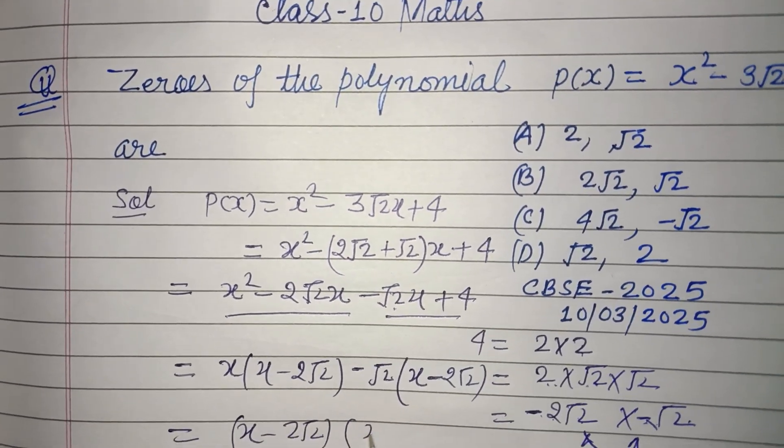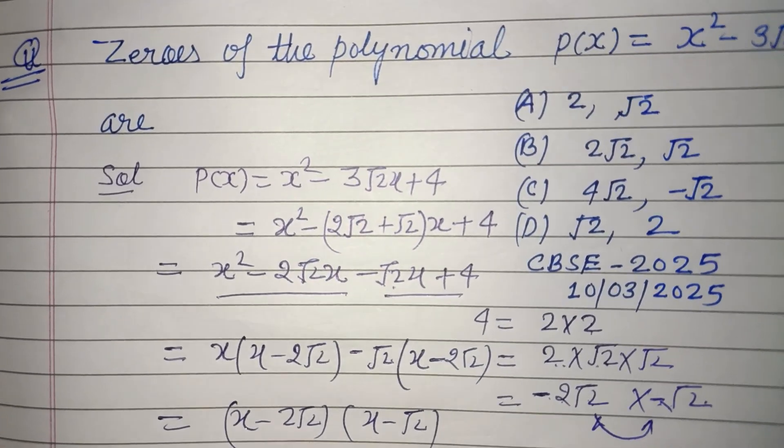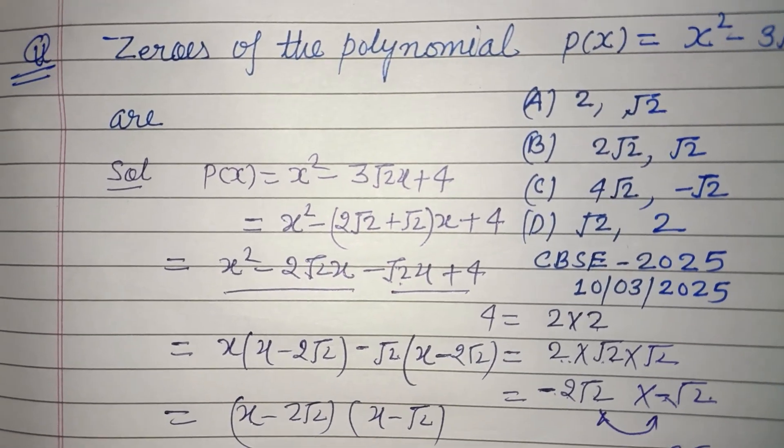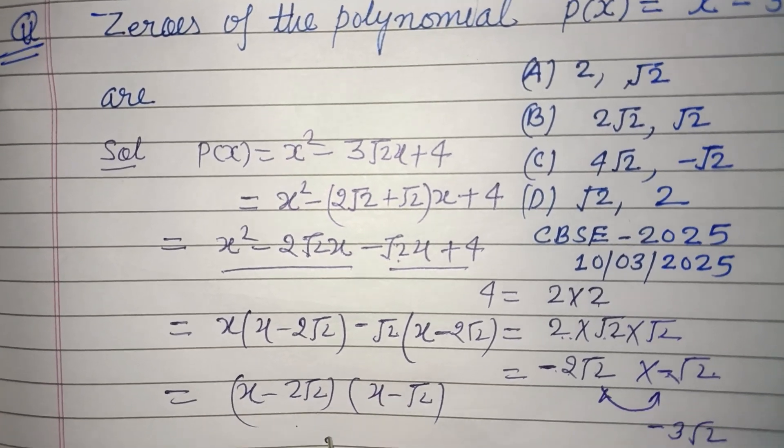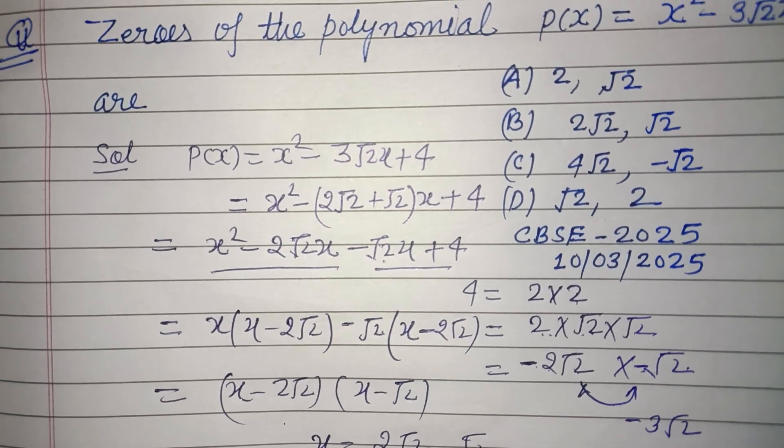(x - 2√2) and (x - √2) become factors of this. If we put them equal to 0 to make them 0, we get x = 2√2 and x = √2.